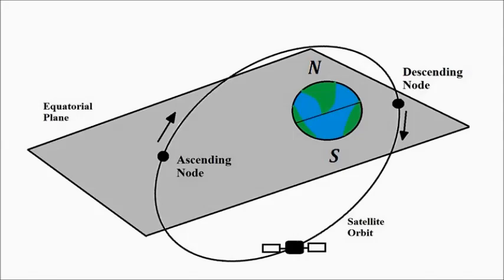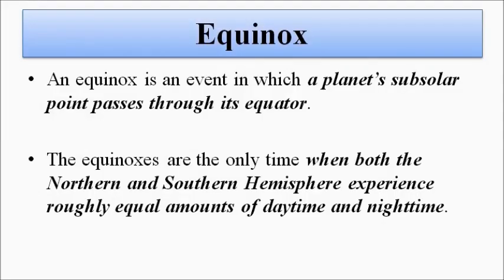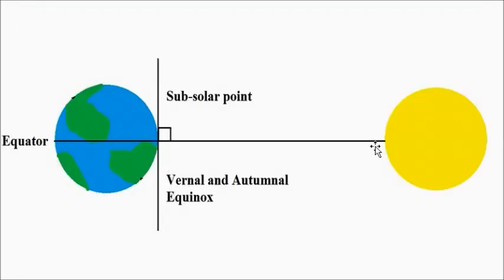To explain right ascension, we require another term: equinox. We have already discussed equinox and solstice, so please watch the previous videos first. Equinox is an event where the solar declination angle is zero and where the subsolar point — that is, the line joining the center of the sun and the earth — passes exactly through the equatorial line. It happens twice a year: the autumnal equinox and the spring or vernal equinox.